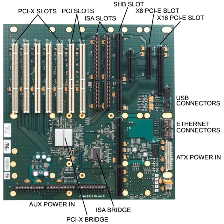In addition, there are bus expansion cables which will extend a computer bus to an external backplane, usually located in an enclosure, to provide more or different slots than the host computer provides. These cable sets have a transmitter board located in the computer, an expansion board in the remote backplane, and a cable between the two.